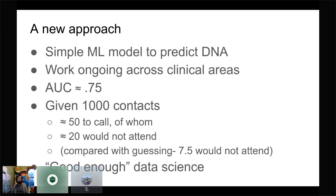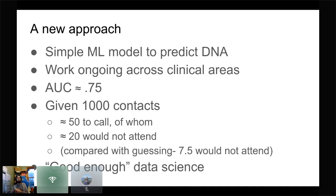The algorithm is okay — not amazing. The area under the curve is about 0.75. What I've been telling people is: if you give me 1,000 appointments, I can say you should ring these 50 people, and if you ring those 50 people, 20 of them wouldn't have come if you hadn't called. Compare that with just guessing randomly — you'd get seven and a half. So it's not amazing, but I think it could do with more iteration in different contexts, particularly tuned within specific clinical areas.